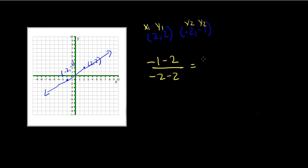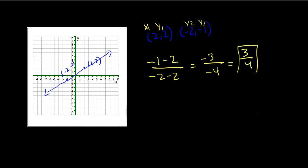Now let's simplify this. Negative 1 minus 2 is going to give us negative 3. Negative 2 minus 2 is going to give us negative 4. Because there are two negatives, it becomes a positive 3 fourths. So the slope of the line is 3 fourths.